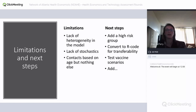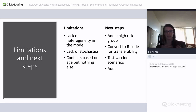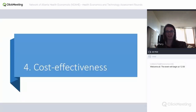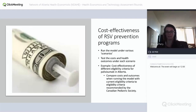Next steps include adding a high-risk group with higher risk of severe outcomes. We'll convert the model from MATLAB to R to ensure transferability to other provinces, who can then fit it to their own data. We'll also test different vaccine scenarios, and finally conduct a cost-effectiveness analysis comparing current practice (palivizumab in Alberta) against future vaccines — running the model with and without vaccine scenarios and comparing costs and effects, using stochastics by running multiple iterations.